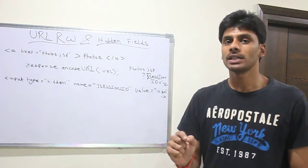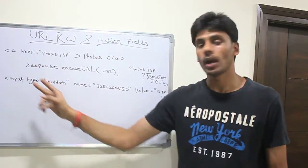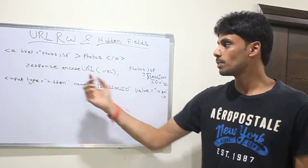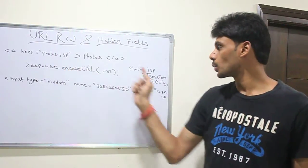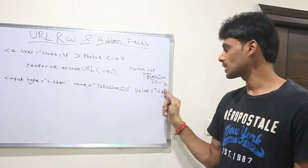From your home page, the user has clicked on a link and then you are going to launch a photos.jsp. In that photos.jsp link, you are also going to append a unique J session ID.